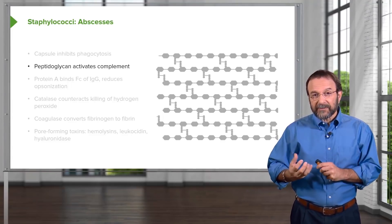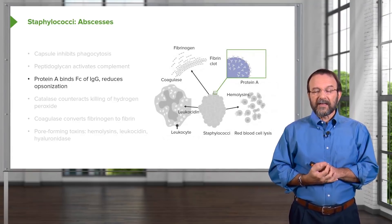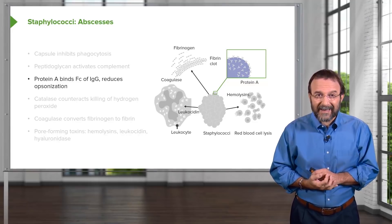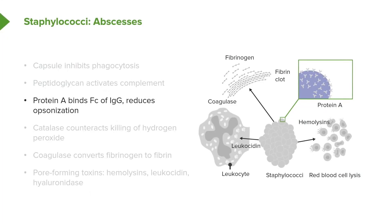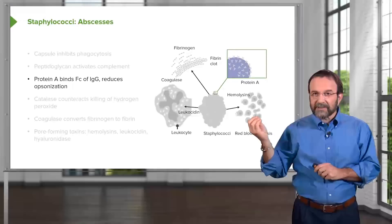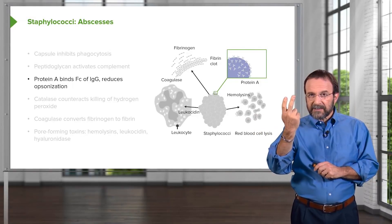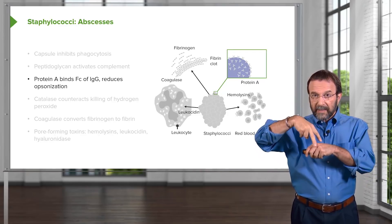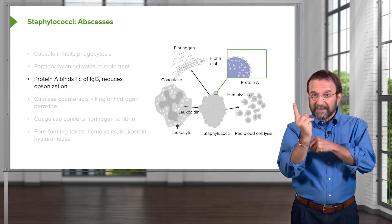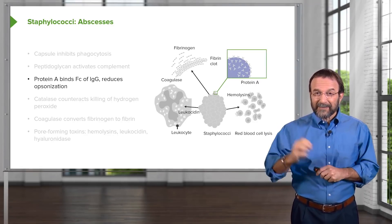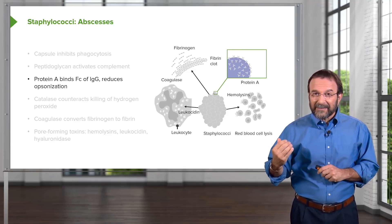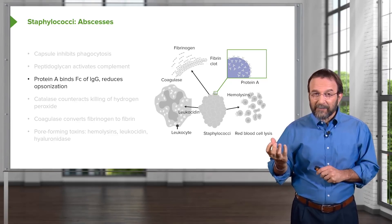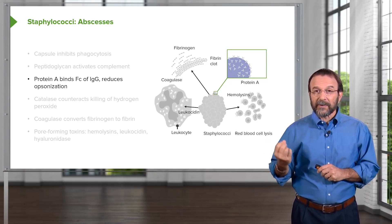Complement will cause lysis of the bacteria and production of cytokines, contributing to the inflammatory reaction inside the carbuncle. The bacteria also make a protein called protein A, shown on the surface of the bacterium. Protein A binds the Fc portion of antibody molecules — antibodies are Y-shaped, with the Fc at the bottom and antigen-binding sites at the top. The staphylococcus binds the antibody the wrong way, reducing opsonization and uptake into macrophages — a very clever strategy.